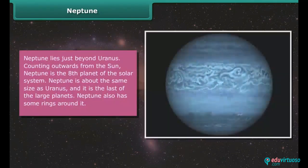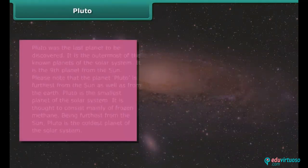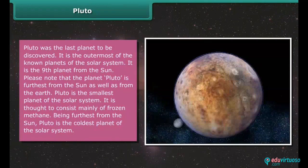Neptune. Neptune lies just beyond Uranus. Counting outwards from the sun, Neptune is the eighth planet of the solar system. Neptune is about the same size as Uranus and it is the last of the large planets. Neptune also has some rings around it.